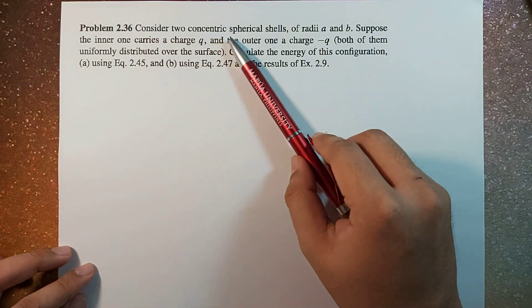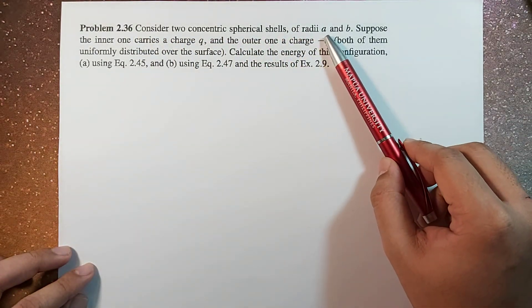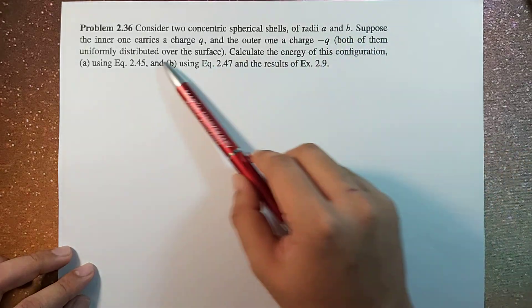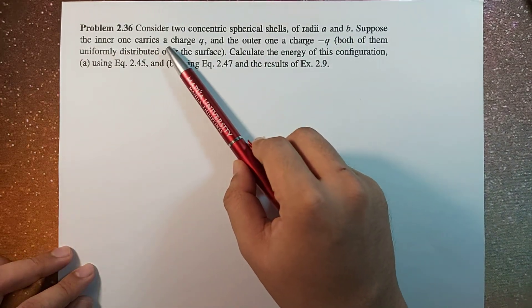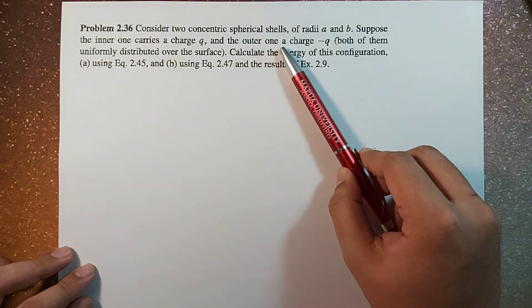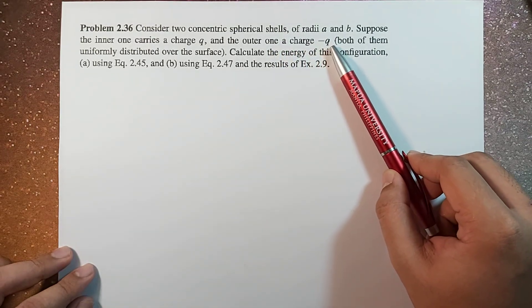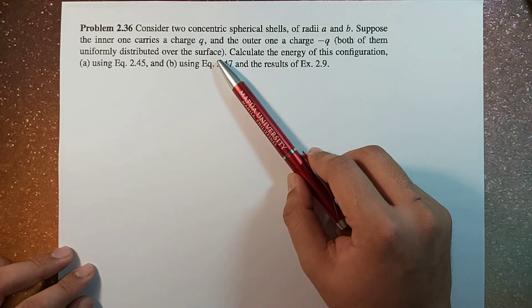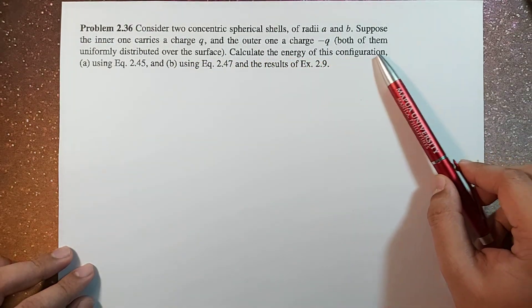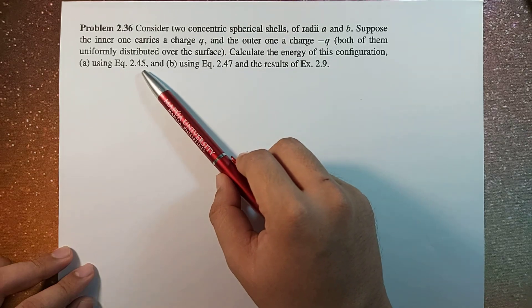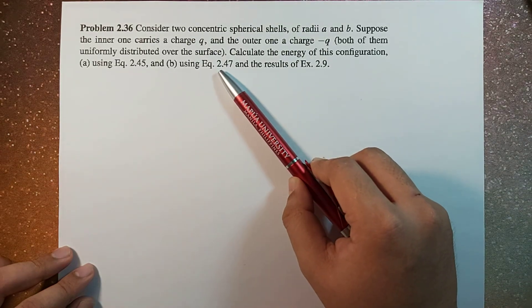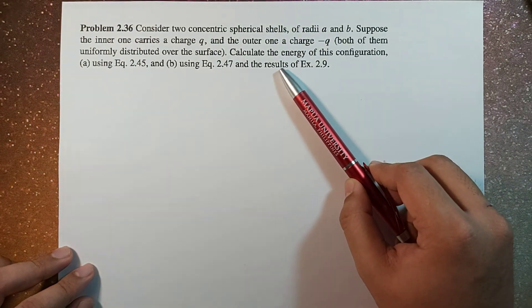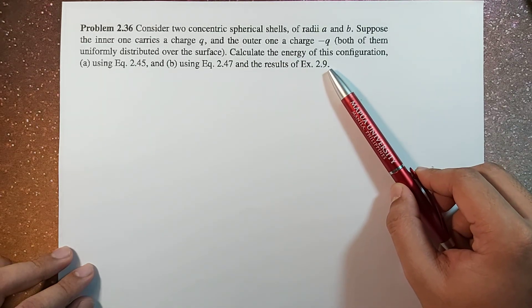consider two concentric spherical shells of radii A and B. Suppose the inner one carries a charge Q and the outer one has a charge negative Q, both of them uniformly distributed over the surface. So calculate the energy of this configuration using equation 2.45 and equation 2.47 and the results of example 2.9.